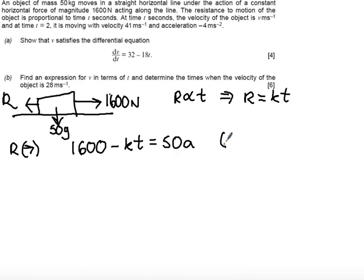And actually, if I divide both sides by 50, what we get is that we have 32 minus k over 50, t equals a.